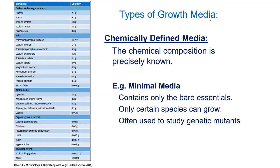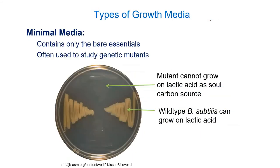Some media are very precisely defined — these are called defined or minimal media, used by scientists studying genetic mutants or characterizing an organism's metabolism for the first time. You know exactly what's in it and mix each chemical one at a time. For example, a geneticist looking at a mutant of Bacillus subtilis might use a media where the only carbon source is lactic acid — the wild type grows, but a mutant that can't metabolize lactic acid cannot.